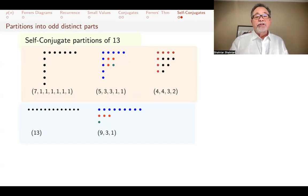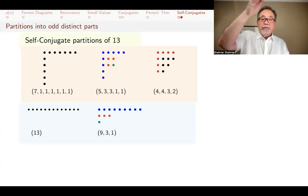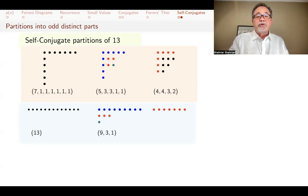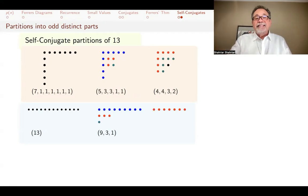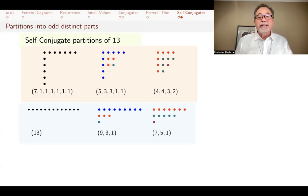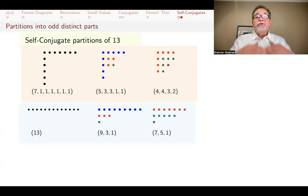I'll do the same thing with the third self-conjugate partition: take the top layer and left-hand side layer, straighten into one row, then go in and do the next layer, and finally the last one. As a result, I get the partition 7, 5, 1. Vice versa, you can reverse this process.